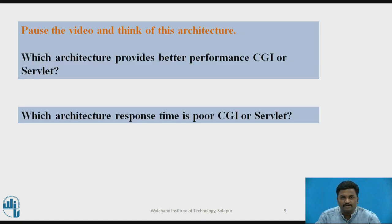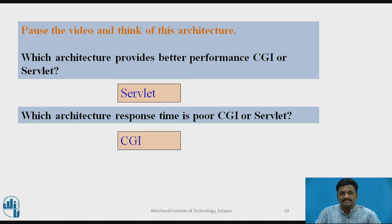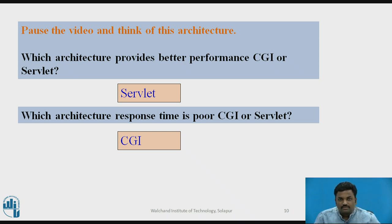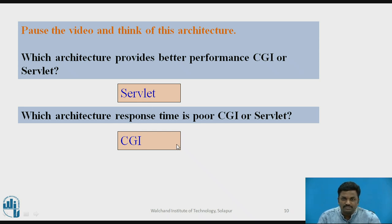You can pause the video and answer these questions: which architecture provides better performance, CGI or servlet? Which architecture has poor response time, CGI or servlet? Servlet provides better performance because it uses threading, while CGI has poor response time because it creates processes individually.